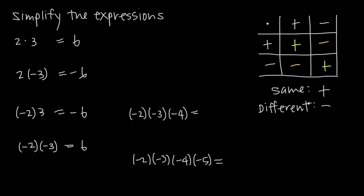The reason the two-number rule works is that for every two negative signs you have, they cancel each other out and become a positive. So with negative 2 times negative 3, two negative signs cancel and become positive, giving positive 2 times positive 3, which is positive 6. The real conclusion is: if you have an even number of negative signs, the result is positive; if you have an odd number of negative signs, the result is negative.